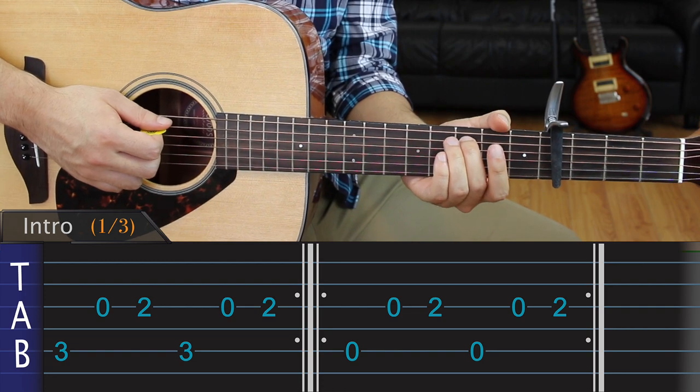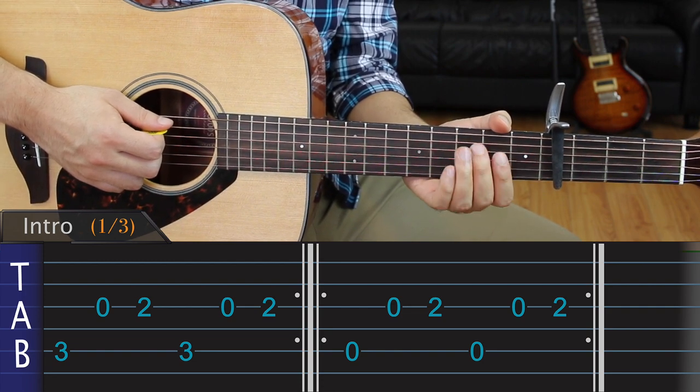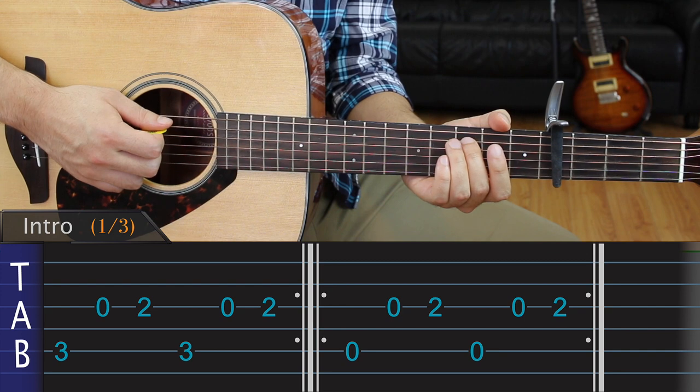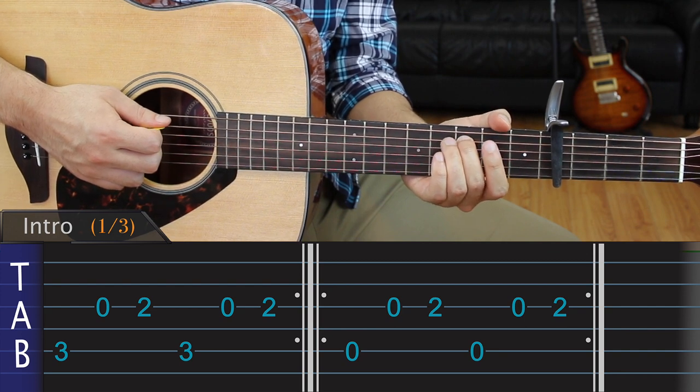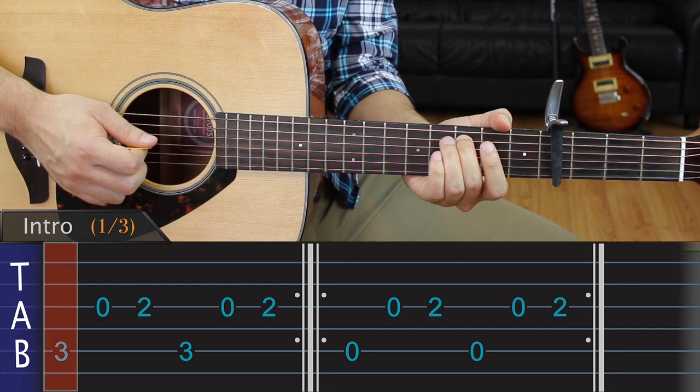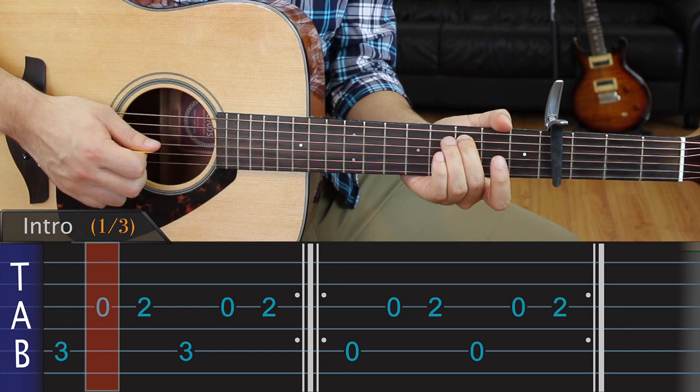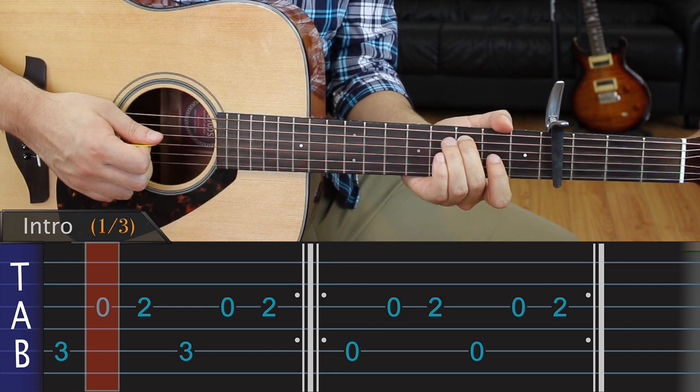Alright, we're going to break the intro down into five parts. Each section will be made up of six notes. We'll start by playing the third fret of the A string. After this, we play an open G, followed by the second fret of the same string.